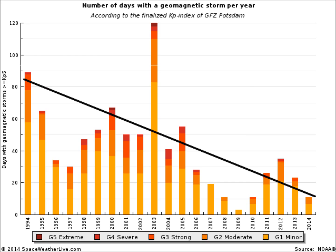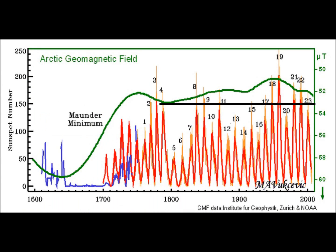With a little more digging, you can find the arctic geomagnetic field. Notice the horizontal black line at 1800 — the geomagnetic field is decreasing and we should start to match up with conditions around 1800.